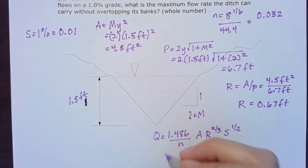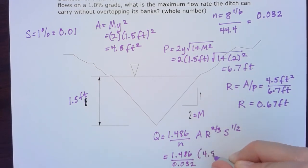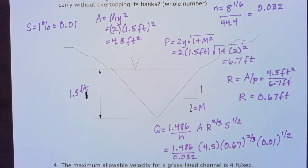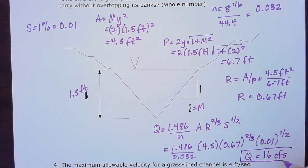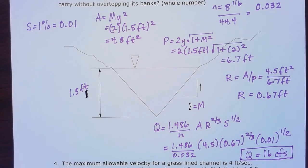Let's put those numbers in: 1.486 divided by 0.032 times that area, which is 4.5—and I'm just going to drop my units here because I know at the end I'm going to get cubic feet per second if I put these all in in the right dimensions—times 0.67 to the two-thirds and 0.01 to the one-half. Finishing up that math, I wind up with Q equal to 16 cubic feet per second for homework problem three for chapter four.